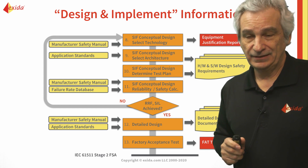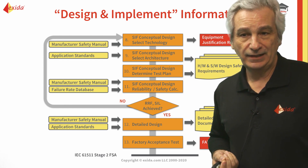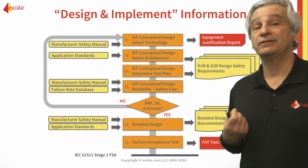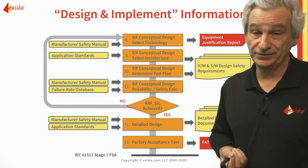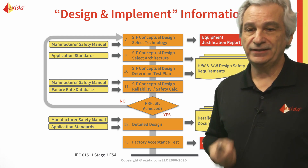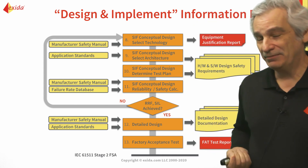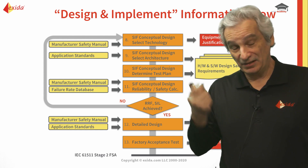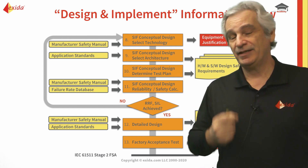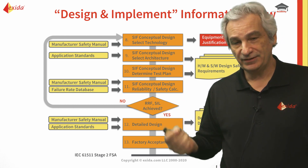Once we've selected our equipment and system, we need to think about how we're going to test it, and we need to think about the architecture for the design — are we going to use redundant components, are we going to do online testing? All of that needs to be considered. You'll notice on the left-hand side: manufacturer's safety manual. One thing I like to get the class to remember is to 'read the flaming manual' — RTFM.